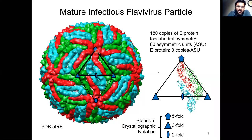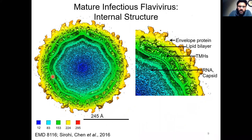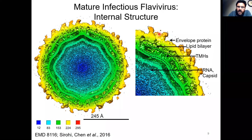This black triangle represents one of the 60 identical asymmetric units. In icosahedral symmetry, there are 60 such asymmetric units on the surface of the virus. Because there are 60 asymmetric units but 180 copies of the E-protein, 180 divided by 60 gives you three copies of the E-protein present in every asymmetric unit.